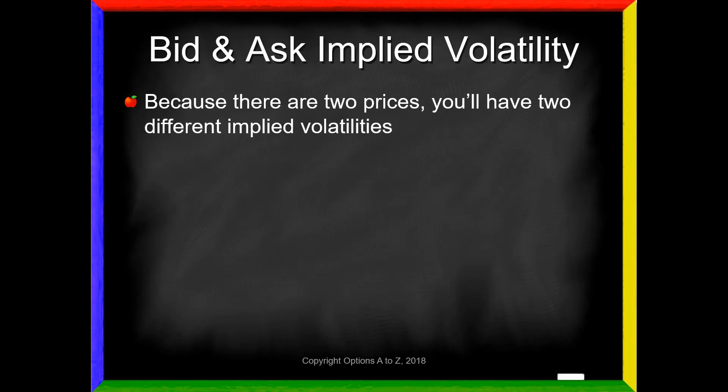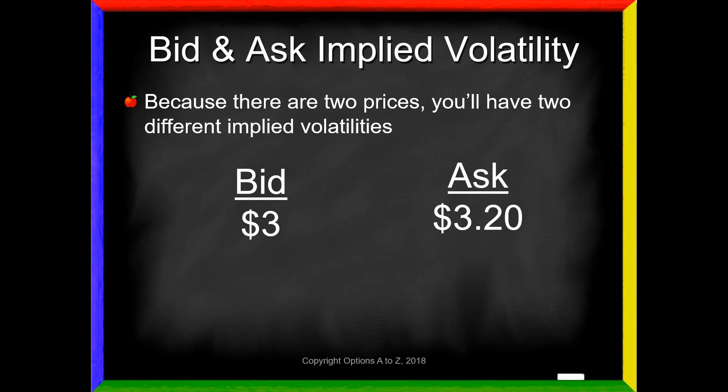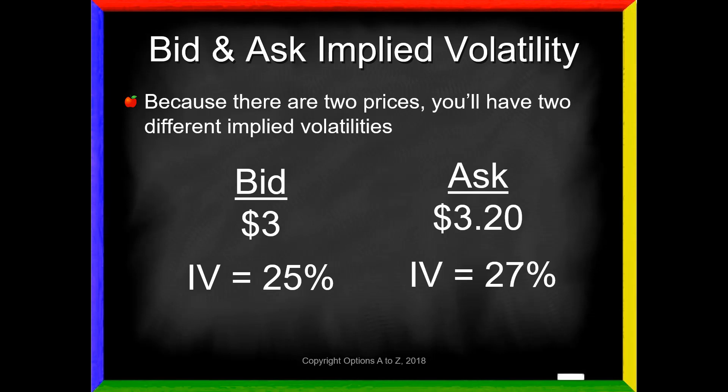However, because there are two prices, you will actually have two different implied volatilities. Going back to that example, if the bid is $3 and the asking price is $3.20, we could go back to our Black-Scholes model and say, what volatility is necessary to create a price of $3? The model might say you would need to plug in 25%. Then I could go right back to that same model, keep all the inputs exactly the same, and ask, what if the price is $3.20? The model might come back and say now you'd need a volatility of 27% to generate a price of $3.20. Most professional platforms will show you the bid and ask implied volatilities, and there are very good reasons for doing so.